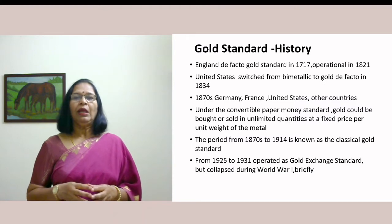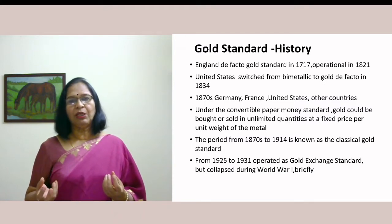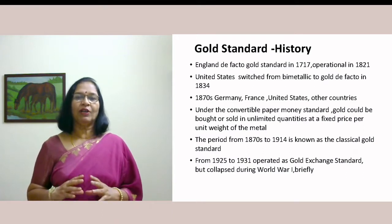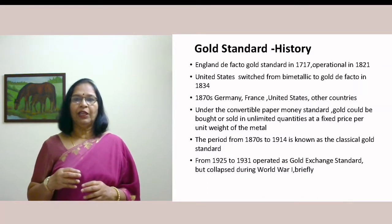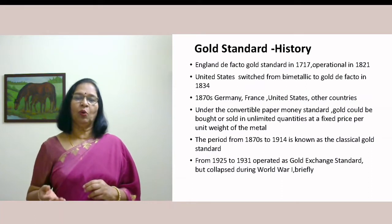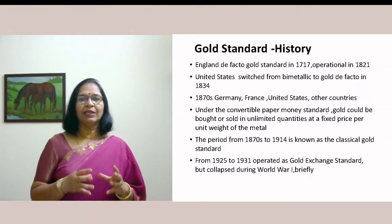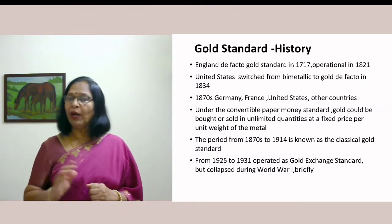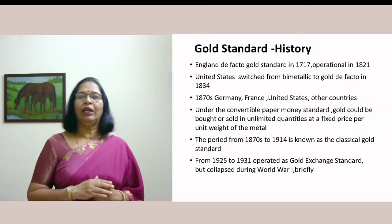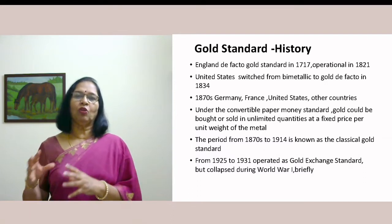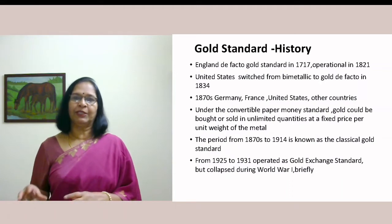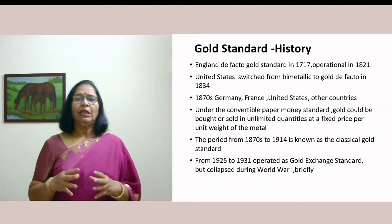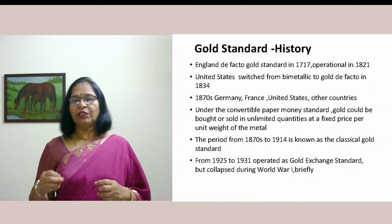Under the gold standard there are two systems: the convertible gold standard and the inconvertible gold standard. Under the convertible gold standard, it is possible to convert paper notes in circulation into actual gold at the government mint. A person holding currency notes could take them to the government mint and exchange them for gold — the government was obliged to give gold in return if demanded. This meant an equal amount of gold was kept with the government in its mint, at a fixed quantity and purity of metal. This operated during the period 1817 to 1914 — the golden era of the gold standard.